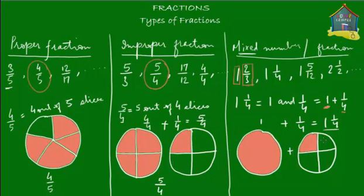If you compare the improper fraction column and the mixed number column: the improper fraction 5 upon 4 is represented by 1 whole pizza and 1 out of 4 slices of the second pizza — the same as the mixed number 1 and 1 quarter. So 5 upon 4 is actually equal to 1 and 1 quarter. Improper fractions can be converted to mixed numbers and vice versa, and you'll see how to do that in the next lesson.